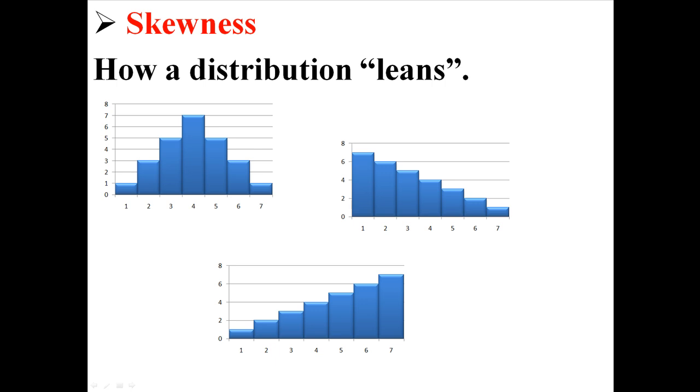One of these is normally distributed, which means it has no skew. One of these is skewed to the left, and one of these is skewed to the right, and I'm going to show you which ones.